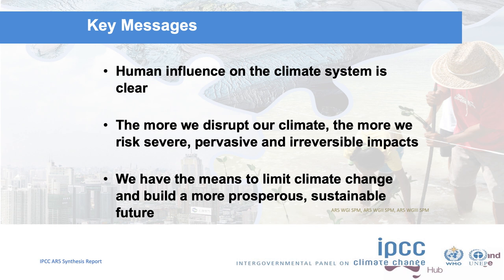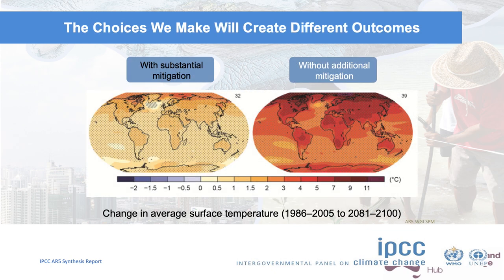Key messages: the human influence on the climate system was clear in 2007, and it's still clear. The more we emit greenhouse gases, the more global warming there'll be, and the more will be the risk of severe and irreversible impacts. We can build a more sustainable, prosperous future, but we have to make choices — between the world on the left, for which global warming is limited to roughly 2 to 2.5 degrees with substantial ongoing mitigation and zero net emissions globally by 2050, or the world on the right, for which global average temperatures are of the order of 6 degrees and global land average temperatures are of the order of 10 degrees.